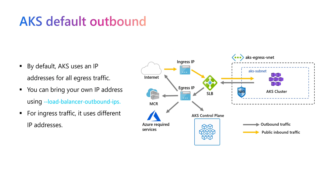When you create an AKS cluster, the default outbound type of type load balancer will create a specific IP address that will be used only for the egress traffic. All the applications within the cluster will use that static IP address to go to the internet. You can let AKS create an IP address for you, or you can specify your own IP address through the load balancer outbound IP parameter, passing either one or multiple IP addresses.